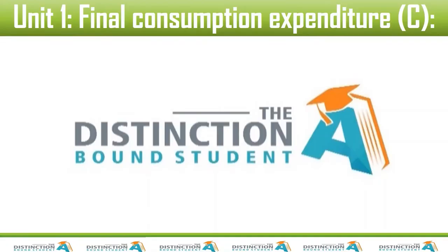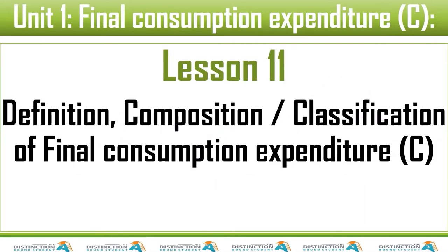We normally start with revision of homework, but in this particular lesson we're not going to do so because the previous lesson was a test, and I don't normally give homework after a test. So previous lesson was lesson number 10. Today we're moving on to lesson number 11 — we're going to define final consumption expenditure by households and look at its composition and classification.